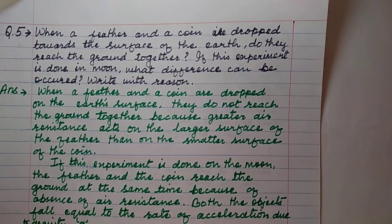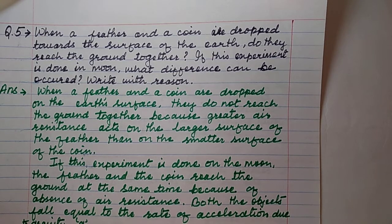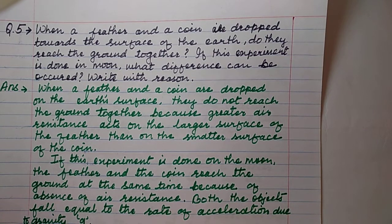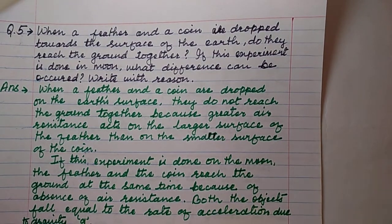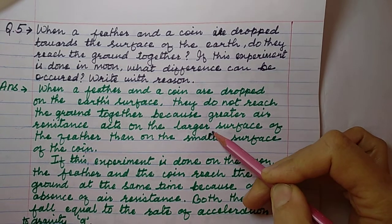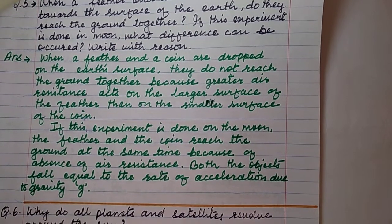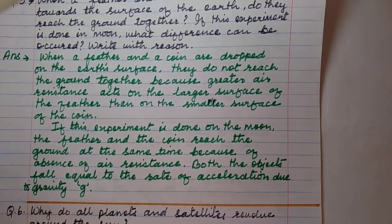When a feather and a coin are dropped towards the surface of the earth, do they reach the ground together? They do not reach the ground together because greater air resistance acts on the larger surface of the feather than on the smaller surface of the coin. The upthrust or air resistance acting on the coin is negligible compared to the upward force acting on the feather.